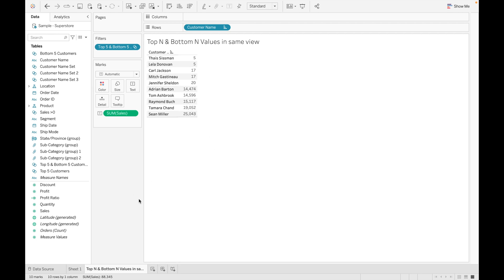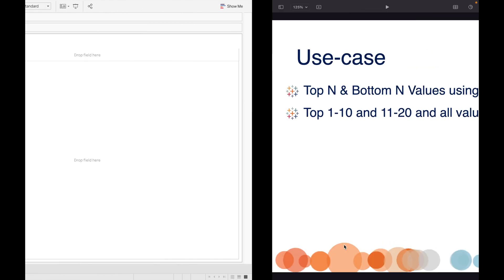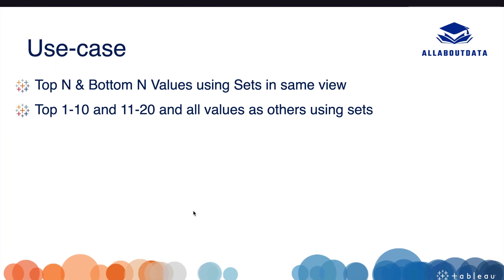This is how you can display top 5 and bottom 5 in a single view. Our second use case is how to show top 1 to 10, top 11 to 20, and all other members as 'Others' in the same view using sets.